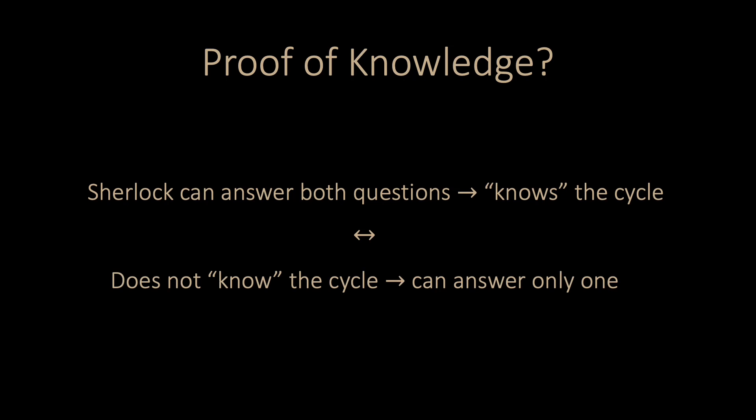Conversely, if Sherlock does not know the cycle, he can answer only one question. If Sherlock does not know the cycle, Sherlock can survive every round with a probability one-half. The probability decreases exponentially if Watson and Sherlock repeat the test n times. If Sherlock does not know how to compute a Hamiltonian cycle, he will likely not be able to answer a challenge in one of the rounds. The exact math is a bit tricky, since Sherlock might also guess correctly randomly.